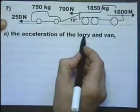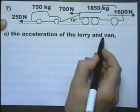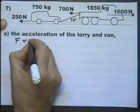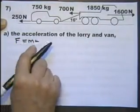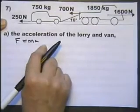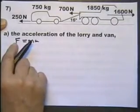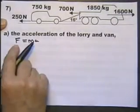Find the acceleration of the lorry and the van. So force equals mass times acceleration. Every time you use this, write it down. Don't think to yourself, oh, the examiner can see what I'm doing. If you use this, write it down.